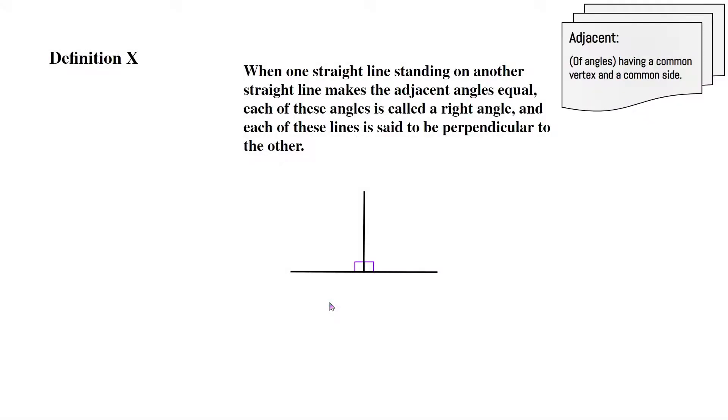Now definition 10. When one straight line standing on another straight line makes the adjacent angles equal, each of these angles is called a right angle, and each of these lines is said to be perpendicular to the other. Now adjacent means of angles having a common vertex and a common side.